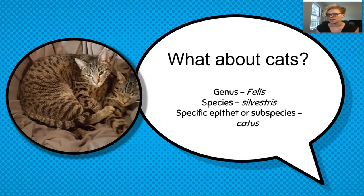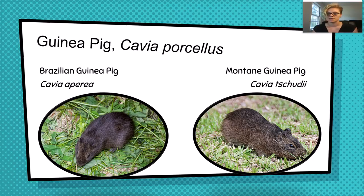Each companion animal species has its own taxonomic classifications as well as a specific domestication story. Guinea pigs descend from either Brazilian guinea pigs or montane guinea pigs, or possibly both. They were originally bred for meat and are still consumed regularly in parts of South America, where they were originally domesticated five to seven thousand years ago. Domesticated guinea pigs are considered different enough from their ancestors to be their own species: Cavia porcellus.